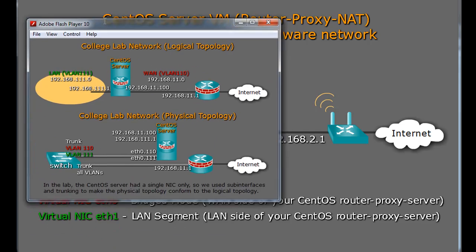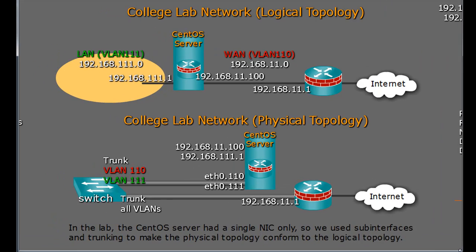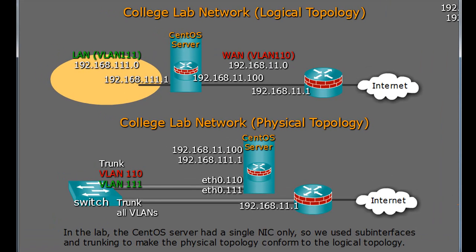We did this lab at the college computer lab, and it was done a little differently because of the student setup there. It's the same basic principle — a CentOS server functioning as a router, with a private local area network on one side and what we call the wide area network or public network on the other side. Both are in fact private, so we're using private addresses on both sides.